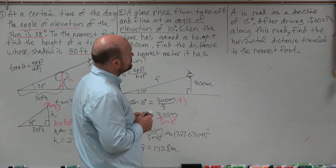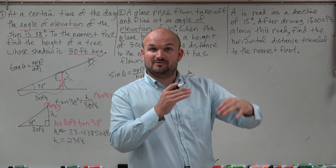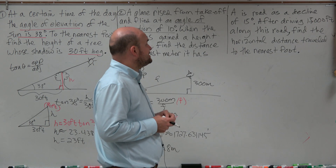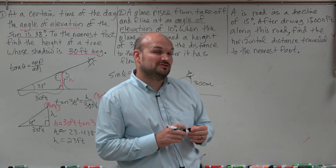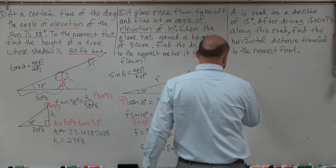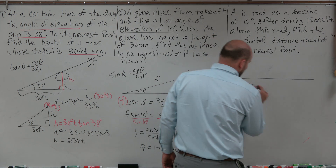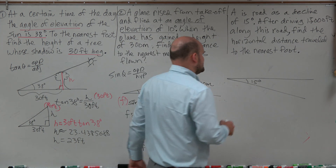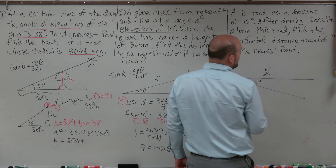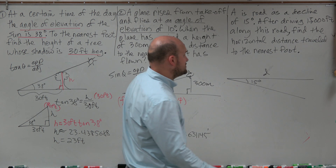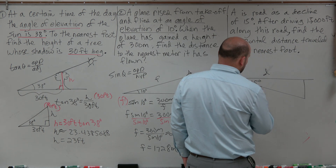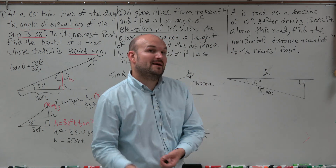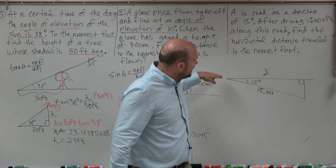Last example: a road has a decline — an angle of depression — of 15 degrees. After driving 15,000 feet along this road, find the horizontal distance traveled to the nearest foot. We draw a horizontal line with a decline of 15 degrees. In this case, we have the hypotenuse (15,000 feet) and we're trying to find the horizontal distance d.